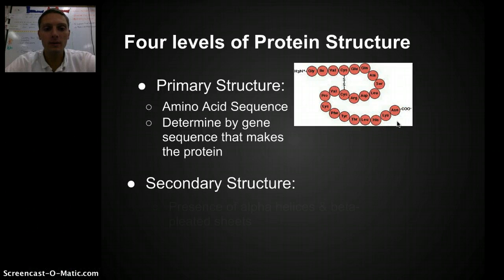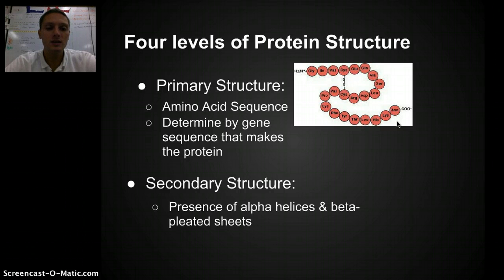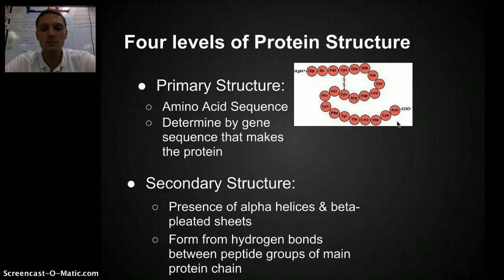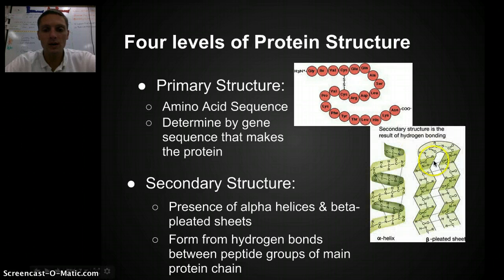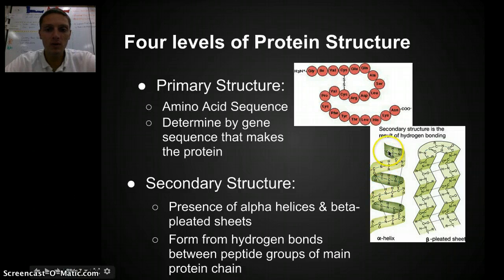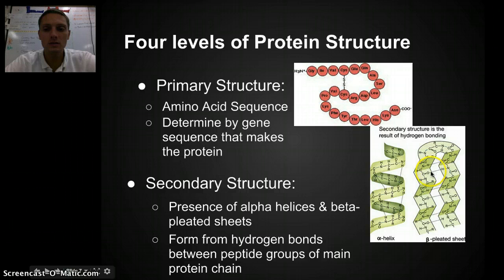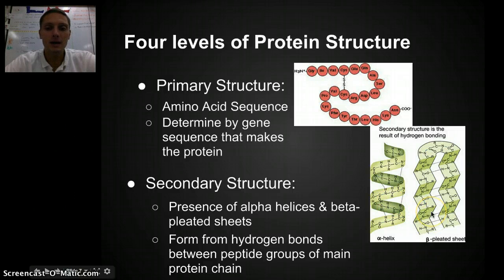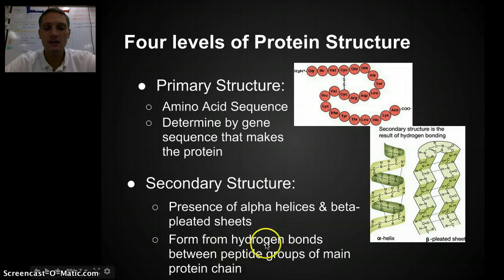The secondary structure gets more complicated — there's the presence of alpha helices and beta-pleated sheets. These form from hydrogen bonds between the peptide groups of the main protein chain. Here's our alpha helix, with hydrogen bonds forming between our different peptide bonds. Multiple amino acids are put together in both alpha helices and beta-pleated sheets, and how this structure forms is by hydrogen bonds occurring between the different amino acids along the chain.